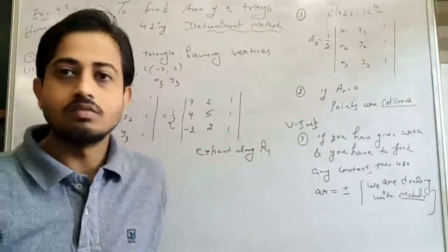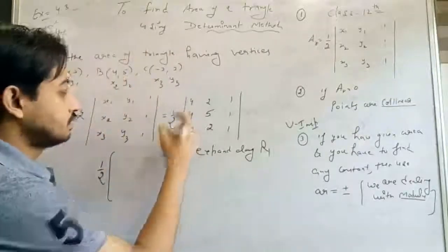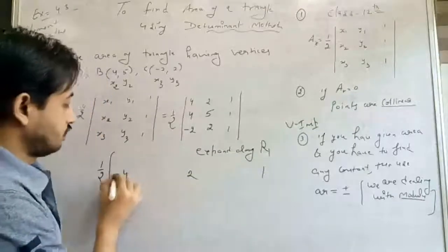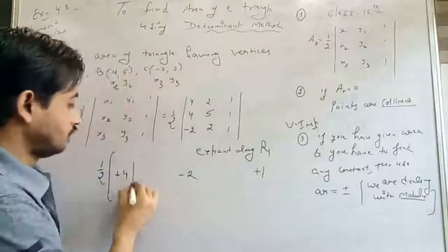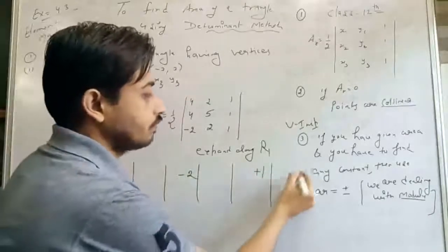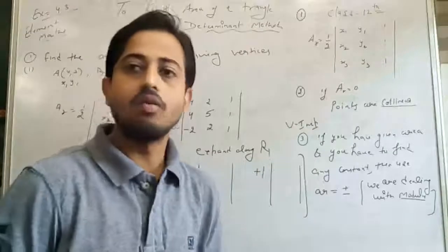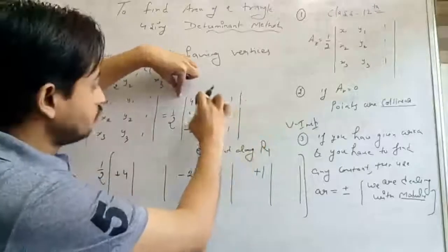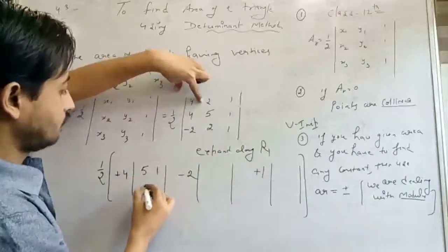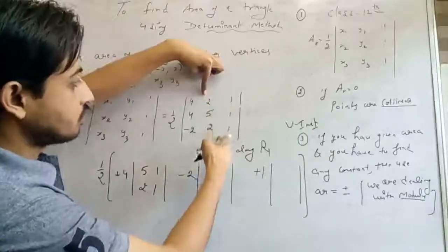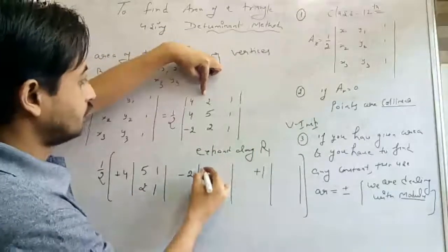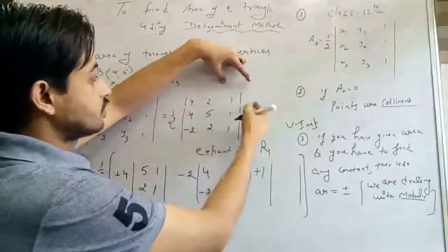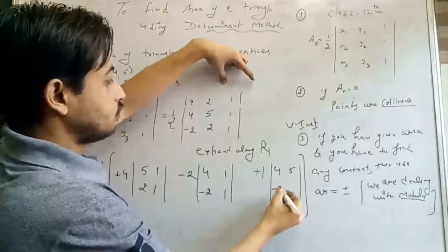Now simplify: 4 × (5×1 − 2×1) − 2 × (4×1 − (−2)×1) + 1 × (4×2 − 5×(−2)). That gives: 4 × (5 − 2) − 2 × (4 + 2) + 1 × (8 + 10). So 4 × 3 = 12, minus 2 × 6 = 12, plus 1 × 18 = 18.